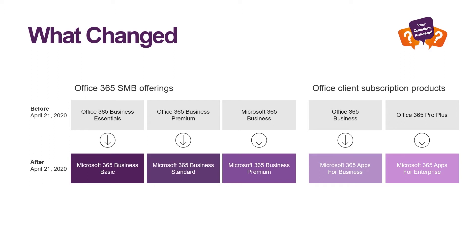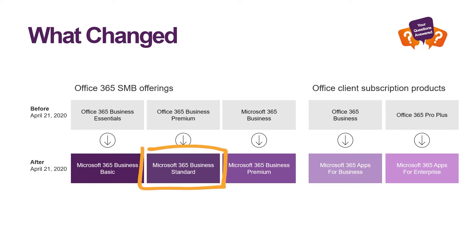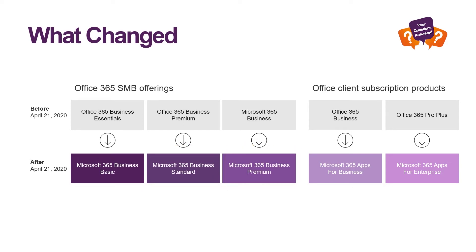So how have things changed? The small and medium business licensing has shifted names and branding. What used to be called the Office 365 Business offerings for small and medium business has shifted to become Microsoft 365 Basic, Microsoft 365 Business Standard, and Microsoft 365 Business Premium.